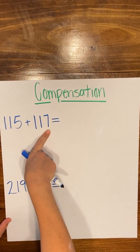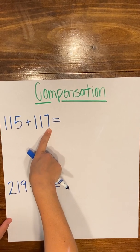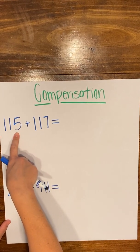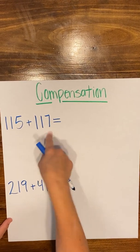well, this would be easier to solve if this number had a zero in the ones place. And so to do that, I would want to take three from 115 and give it to the 117 to make this a nice even 20.